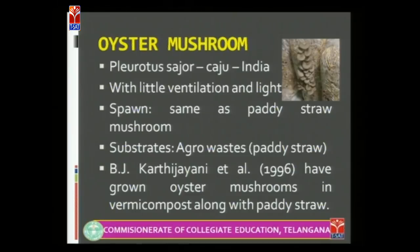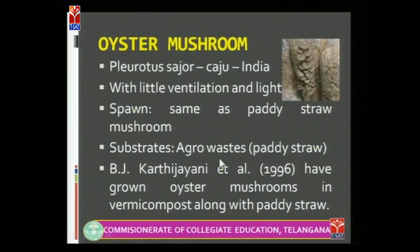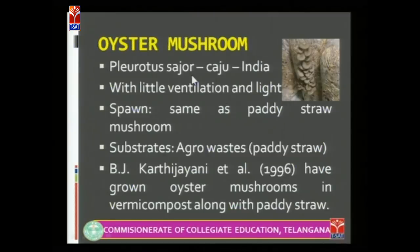Now let us see the cultivation of oyster mushroom, Pleurotus sajur kaju, which is grown in India on a large scale. Its cultivation requires little ventilation and light. Spawn production is the same as for paddy straw mushroom — using grains to produce the mushroom spawn. Different agricultural wastes can be used as substrates, but paddy straw gives the maximum production, so it is preferred for oyster mushroom production.